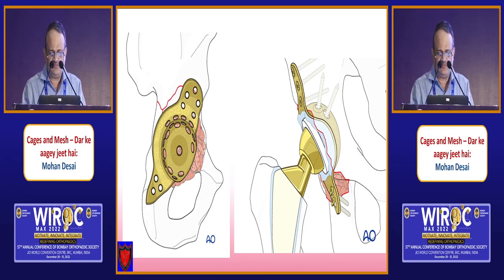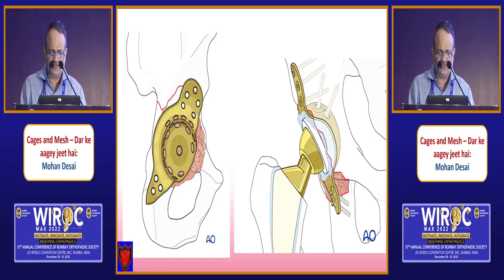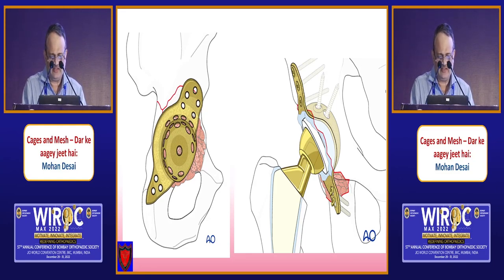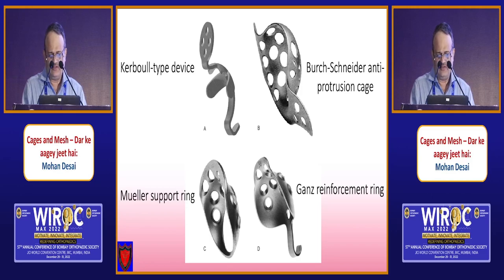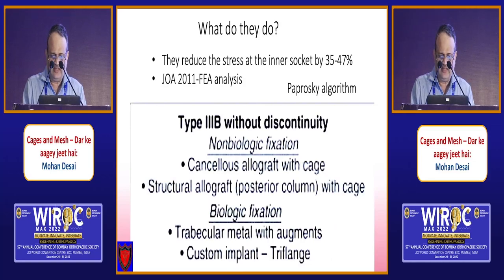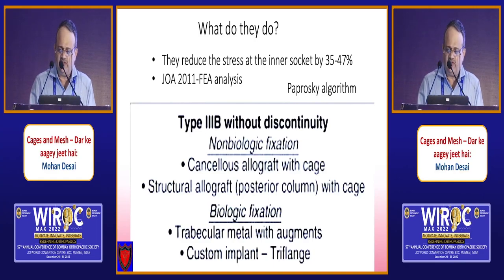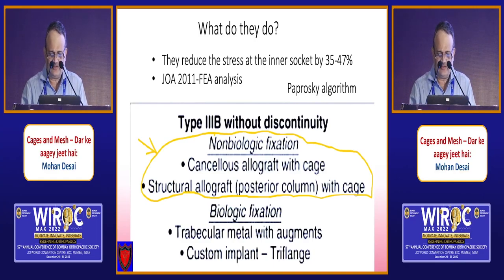The Burch-Schneider cage is a conventional cage — you place the cage first and then cement the cup into it. There are various prototypes: the Burch-Schneider, the GANZ, and Muller supporting acetabular reinforcement rings. They reduce stress at the inner socket by around 35 to 47 percent and provide non-biological fixation. They work well when there is no pelvic discontinuity. Newer companies still making these cages suggests they still have a place.